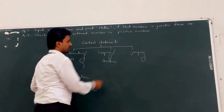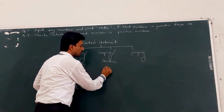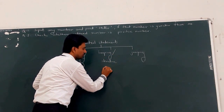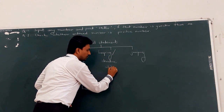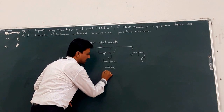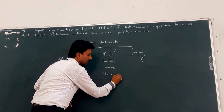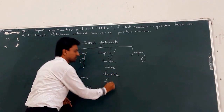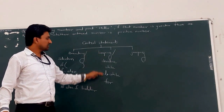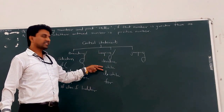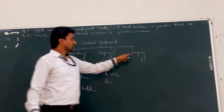After that, looping statements or iterative statements — there are a total of three types of loops. First is while loop, then do-while loop, and the third one is for loop. We will see their syntaxes and best examples later on.